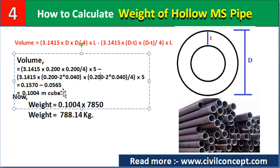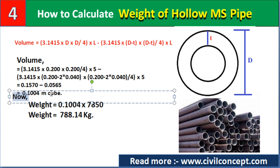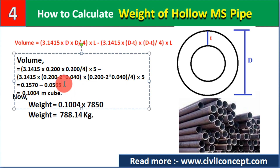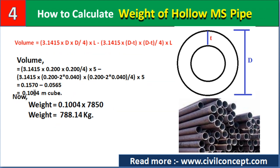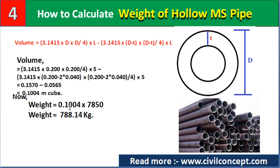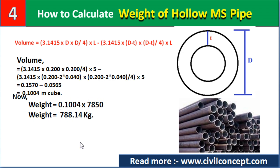Substituting all values into the formula gives a volume of 0.1004 cubic meters. Then weight equals volume into density: 0.1004 × 7850 = 788.14 kg. That is the weight of the round hollow MS pipe.